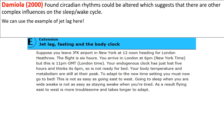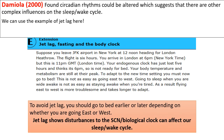Jet lag happens because there's a discrepancy between our internal time - our biological clock, which is usually set to our local time, such as GMT - and the external time at our local destination. This causes significant unrest to our biological clock. To avoid jet lag, you should go to bed earlier or later depending on whether you are going east or west. For example, on a night flight from America to London, it might be best to stay awake so you're well adjusted when you arrive. Jet lag shows that disturbances to the SCN can affect our sleep-wake cycle.